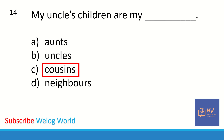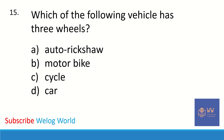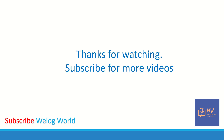The next question: which of the following vehicles has three wheels? Options are auto rickshaw, motorbike, cycle, or car. The correct answer is auto rickshaw — auto rickshaw is the vehicle which has three wheels.